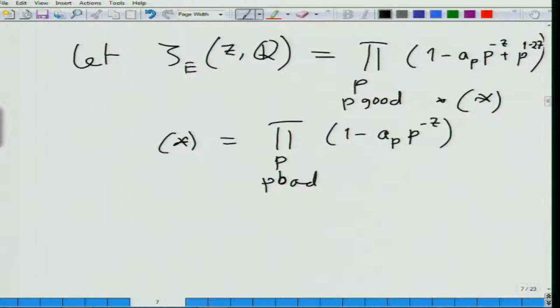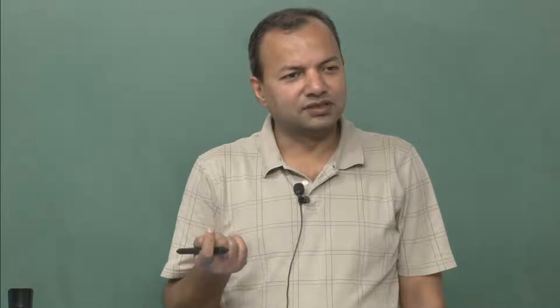The coefficient a_p is not defined in the same way for bad primes. Without going into too much detail, for bad primes a_p is either minus 1, 0, or plus 1, depending on the type of badness. The type of badness could be a repeated root — either 2 roots repeat or all 3 roots repeat.